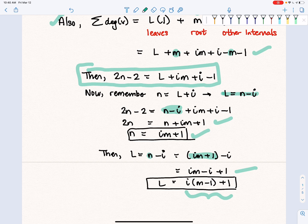So given the number of nodes that a graph has and you know the value of M, you can find the number of internals and the number of leaves. There we have it. Thanks for watching.